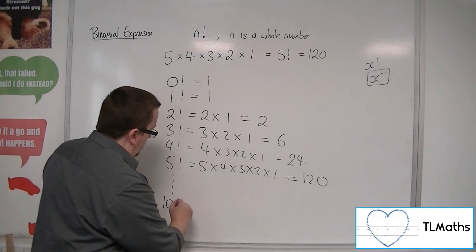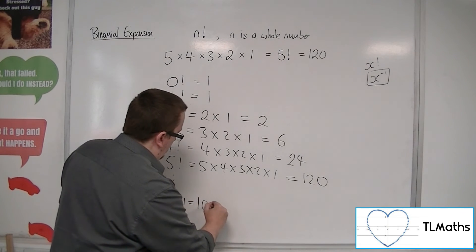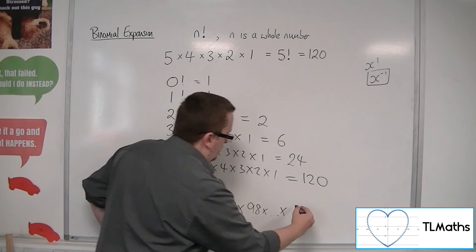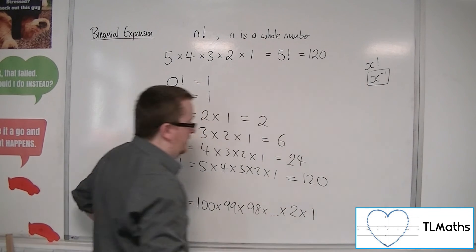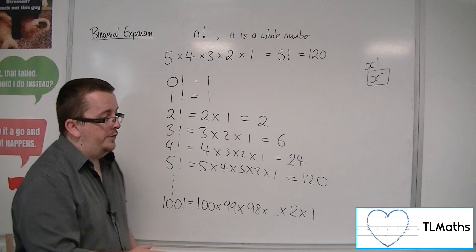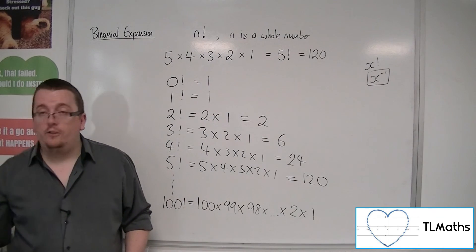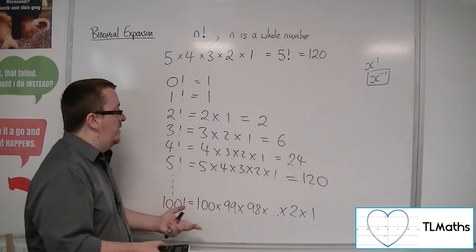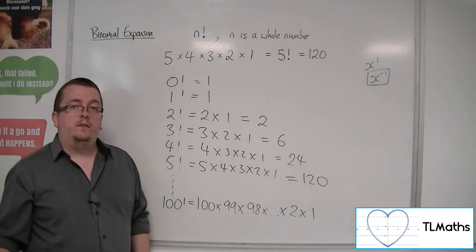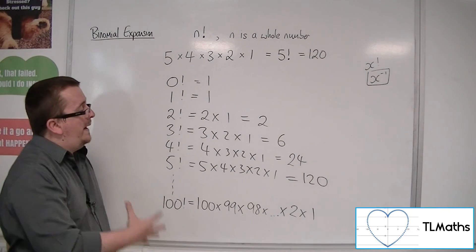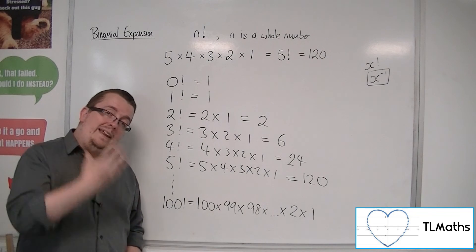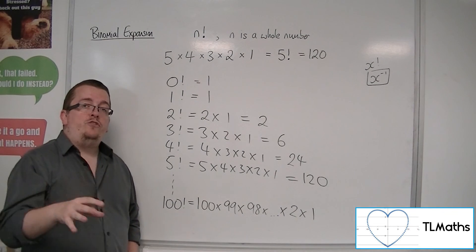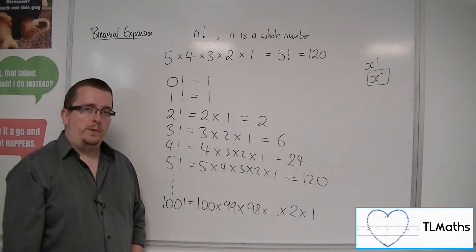And obviously you can go up to whatever value you like. So 100 factorial would be 100 times 99 times 98 times dot, dot, dot, all the way down to two times one. And obviously your calculator can really go only so far with these because they increase very quickly. So this is what a factorial is, and it links in with where we're going next, where we're going to introduce Pascal's triangle and the nCr formula.